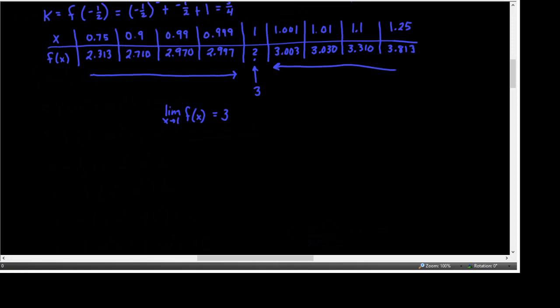An informal definition of the limit is this: if f(x) becomes arbitrarily close to a single number L — like 3 in this problem — as x approaches c — 1 in this problem — from either side, that's important: from the left side of 1 and from the right side of 1, all values as you get closer and closer to 1 from both sides are approaching 3. The limit of f(x) as x approaches c is L. In a more general sense, the limit as x approaches c of your function equals the limiting value L.